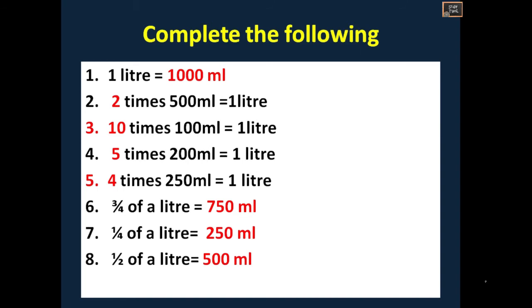Complete the following: 1 liter is 1000 ml. 2 times 500 ml equals 1 liter, that is 1000 ml. You will be getting 1000 ml, that is 1 liter. Then 10 times 100, then 5 times 200 ml is 1 liter. That is you will be getting 1000 ml. 4 times 250 is 1000 ml. Then 3 by 4th of a liter is 750 ml, 1 by 4th is 250 ml, and half of a liter is 500 ml.